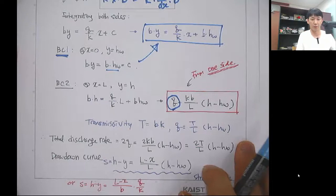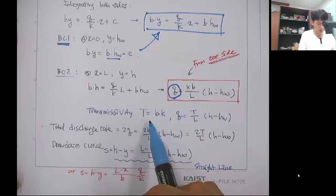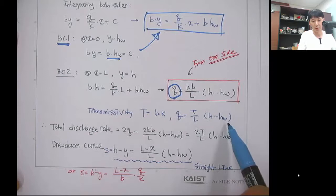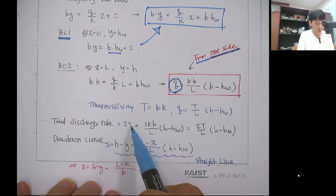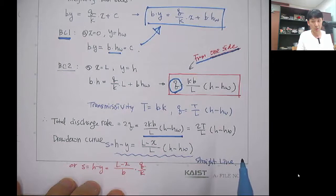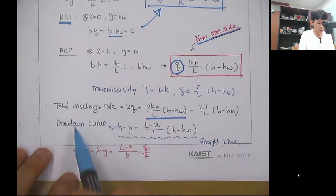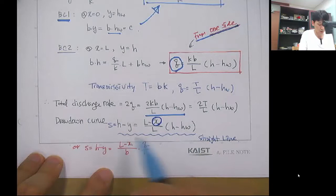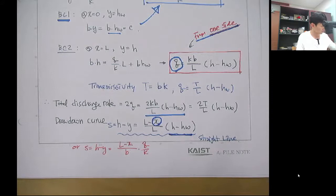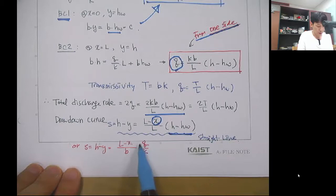Using the transmissivity definition T = b·k, q becomes T·(h - h_w)/l. The total discharge rate from both sides is Q = 2·k·b·(h - h_w)/l. The drawdown curve for the confined aquifer is: h - y = ((l - x)/l)·(h - h_w), which is a straight line. In terms of q and k, the drawdown s = ((l - x)/b)·(q/k).